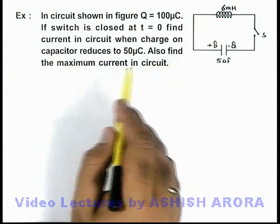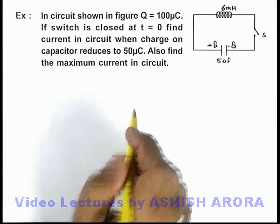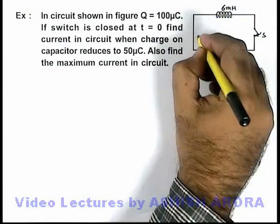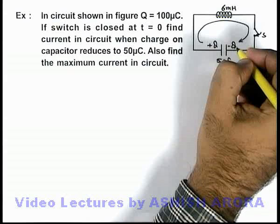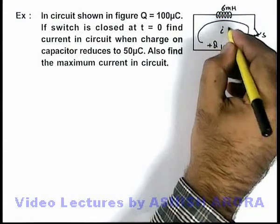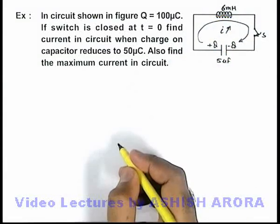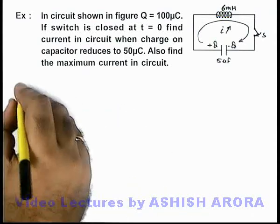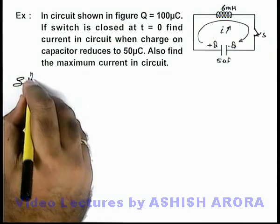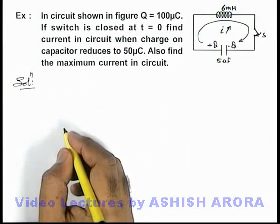We are also required to find the maximum current in the circuit. Here you can see if we close down the switch, it will start discharging through the inductor and the current in circuit increases with time. Now in this situation, we know that under ideal conditions the total energy of circuit remains constant.